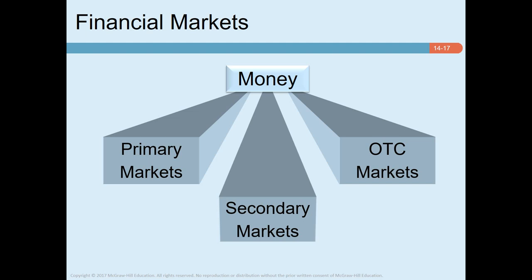Financial markets can also be categorized as organized markets or OTC (over-the-counter) markets. Stock exchanges are examples of organized markets — for example, the Australian Stock Exchange, the New York Stock Exchange, or the London Stock Exchange. The OTC market, on the other hand, is a slightly informal market. Organized markets have a physical location, while OTC markets are a network of brokers and dealers. Each market has listing criteria, and organized markets have more stringent criteria, which is why some companies choose to list on an OTC market instead.